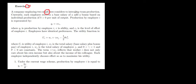Let's have a look at question one in this video. We have a company that employs two employees and they want to introduce team production. Every employee receives a base salary A and a bonus based on his production. The production is given over here.